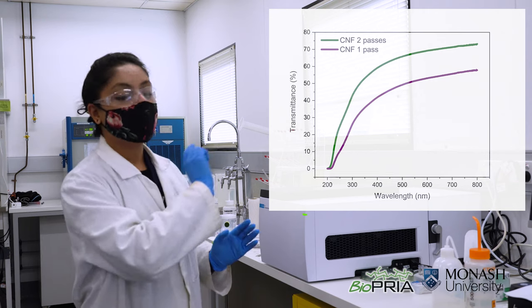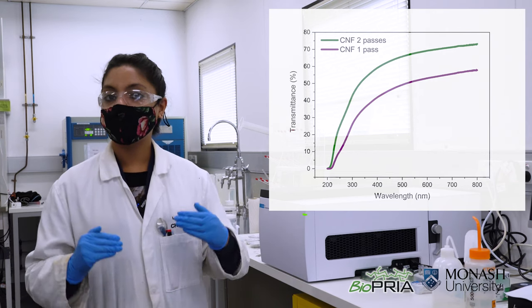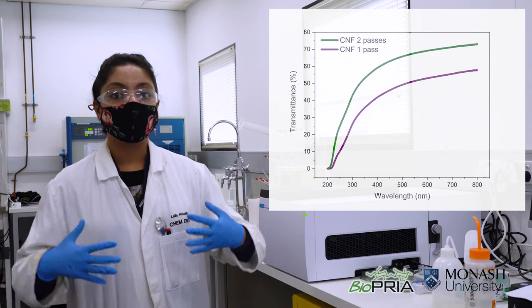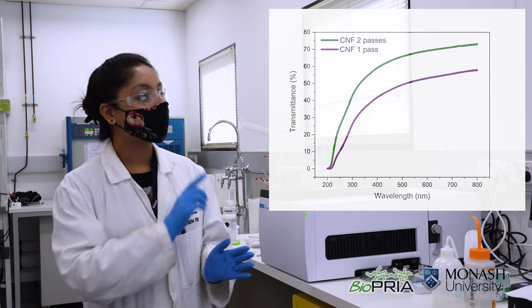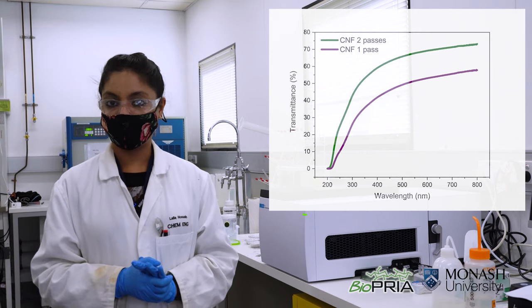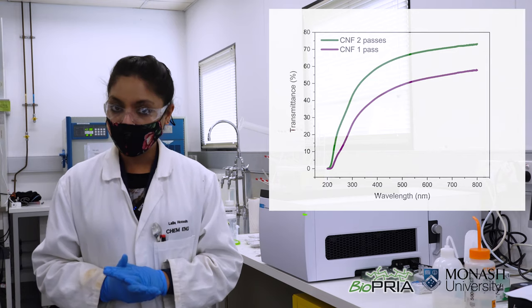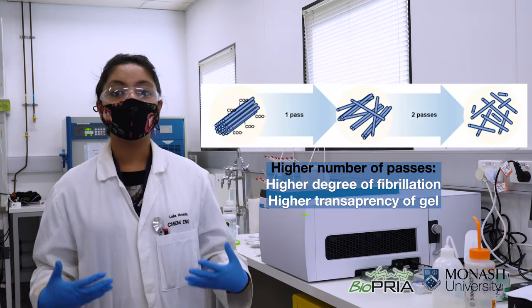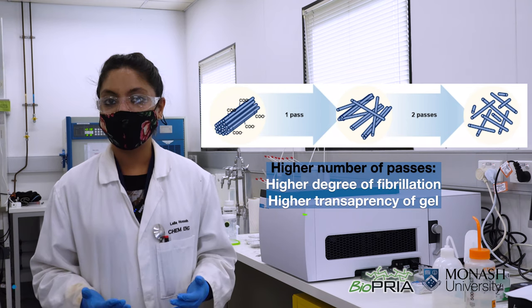This is because the green line two pass nanocellulose hydrogel has got more fibrillation compared to one pass nanocellulose hydrogel. From here we can conclude that when we are getting more fibrillation the gel is becoming more transparent.